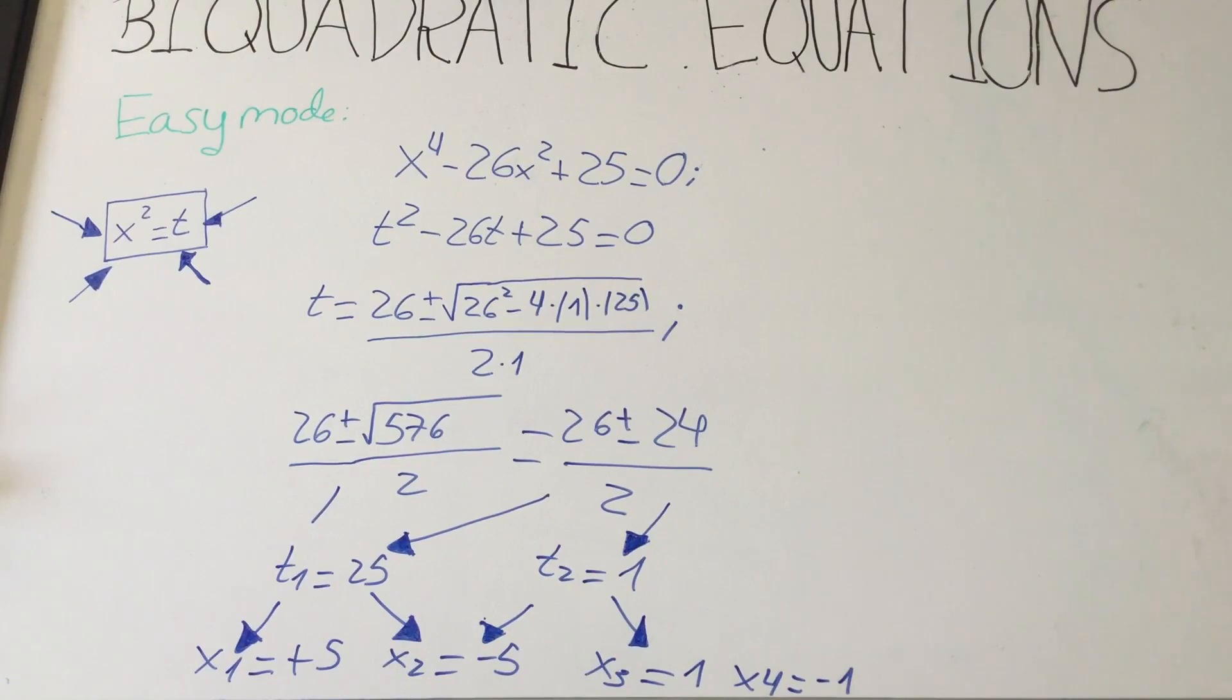So the solutions would be t1 equals 25, so x1 equals plus 5 and x2 equals minus 5. Then t2 would be 1, so x3 is 1 and x4 is minus 1. Easy right?